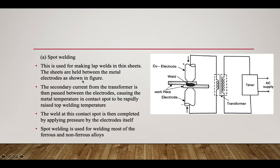The sheets — one above the other — are held between metal electrodes. The secondary current from the transformer causes the metal at the contact spot to rapidly reach welding temperature. The weld is then completed by applying pressure through the electrodes themselves. Spot welding is used for welding most ferrous and non-ferrous alloys.